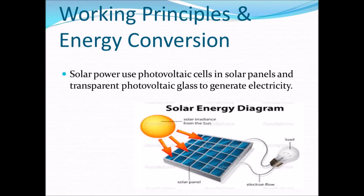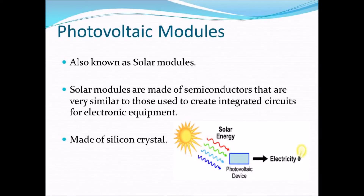Solar energy is converted into electricity using a photovoltaic device in solar panels. Solar panels refer either to a photovoltaic module, a solar thermal energy panel, or to a set of solar photovoltaic modules electrically connected and mounted on a supporting structure. Solar modules use light energy from the sun to generate electricity through the photovoltaic effect. Solar modules are made of semiconductors very similar to those used to create integrated circuits for electronic equipment. The majority of modules use wafer-based crystalline silicon cells, or thin film cells based on cadmium telluride or silicon.